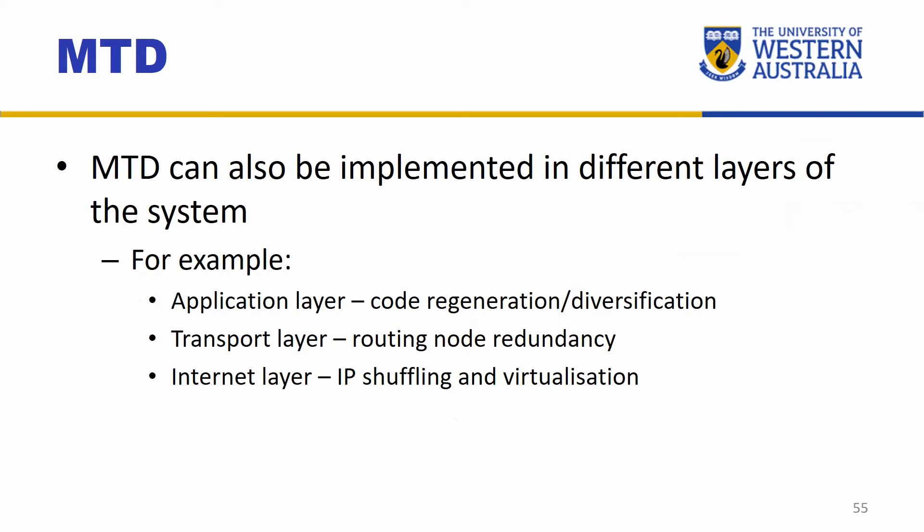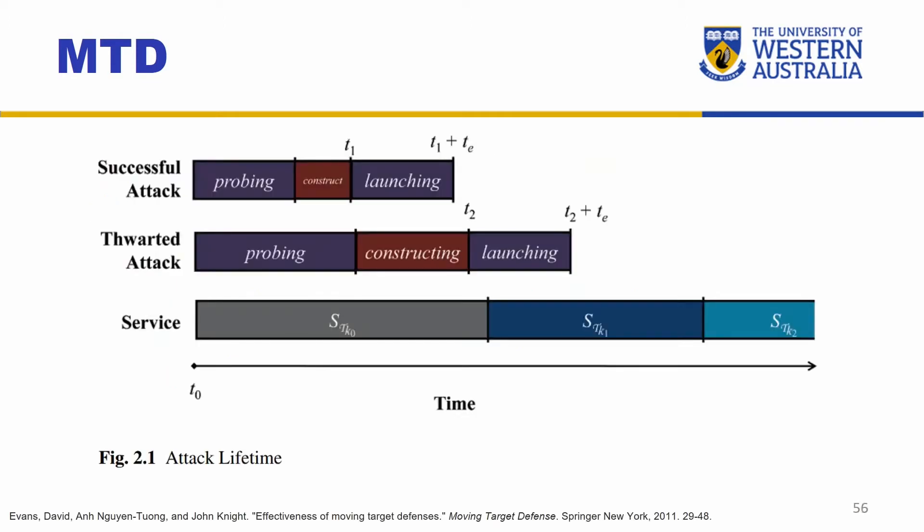Moving target defense can be applied in different layers. At the application layer, we can have code regenerations or diversifications. At the transport layer, the routing nodes can have redundancies — so if one route fails, you can go to a different route, and routing can be shuffled. At the internet layer, IPs can be shuffled and we can also have virtual machines and virtualizations shuffling as well.